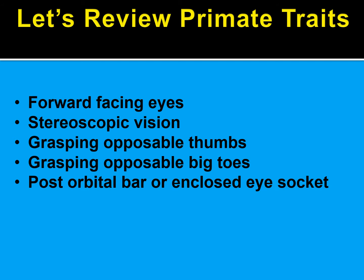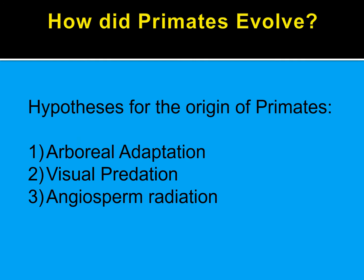Remember your different primate traits, because these are essentially what we are looking for when we dig up a fossil. We can't really see the eyes because the eyes don't survive, but their positioning on the skull will indicate whether or not they have forward-facing eyes. The size of the eyes can indicate stereoscopic vision. We look for grasping opposable thumbs and toes, and either an enclosed eye socket or a post-orbital bar.